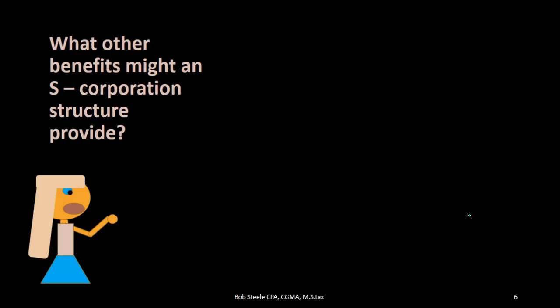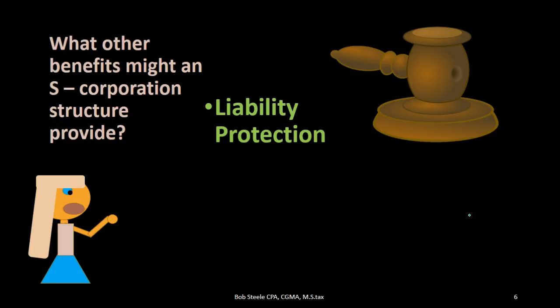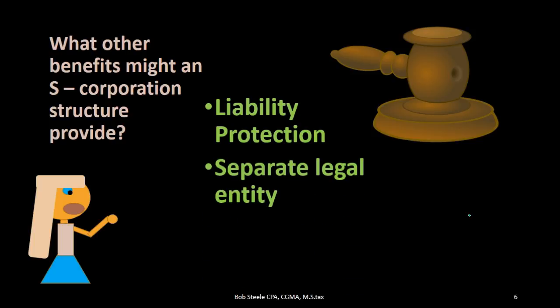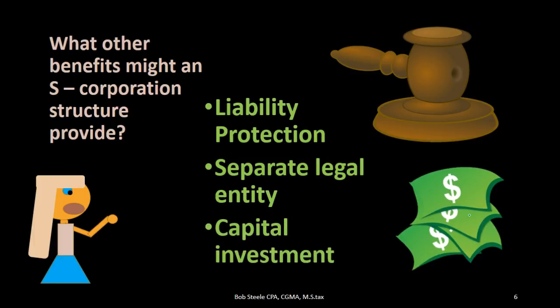What other benefits might an S-Corporation structure produce? The main thing is going to be liability protection from a normal partnership. That's one of the major reasons why someone would want to incorporate — to try to increase that liability protection to personal assets. It's going to be a separate legal entity, which results mainly in that increased liability protection. It's also possible to get more capital investments because we can have more shareholders and therefore have equity investments by the purchasing of shares within an S-Corporation.